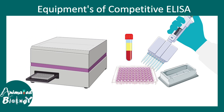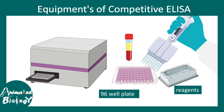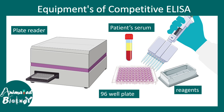Let's look at the equipment required for this assay. You need a 96-well microtiter plate, some pipettes and other reagents, the patient serum, and an ELISA plate reader which would detect the color development.